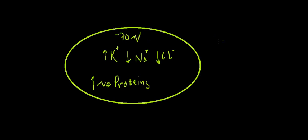Now the outside of the cell, on the contrary, has low levels of potassium ions, high levels of sodium, and high levels of chloride ions. And there aren't any negatively charged proteins.